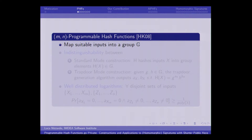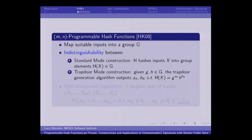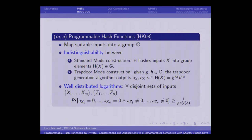A partial answer to this question was given by Hofheinz and Kiltz in 2008 for hash functions which map inputs into a group G. This kind of function has an indistinguishability property between a standard mode construction and a trapdoor mode construction where, given two user-specified generators, the trapdoor generation algorithm outputs two coefficients A and B such that H(x) can be written as G^A times H^B. In addition, we have a well-distributed logarithm property which intuitively says that if we take two disjoint sets of inputs, the probability that the first set has a representation without a factor G while the second set has a representation with a factor G is greater than 1/poly.